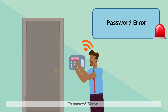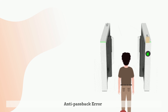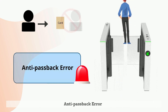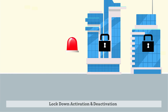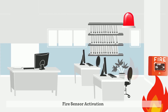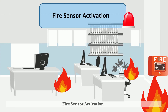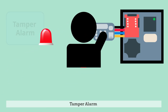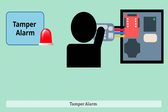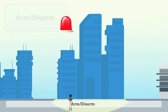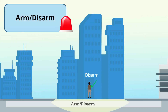Additional alarm events include: Try to use Expired Card, Password Error, Anti-Passback Error, Lockdown Activation and Deactivation, Fire Sensor Activation, Tamper Alarm, and Arm or Disarm.